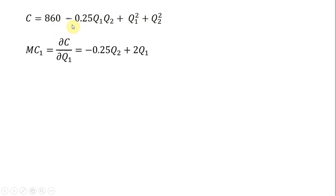Right here, the partial derivative of this term is just going to be minus 0.25 Q subscript 2. Okay? And then bring down the 2 in front. We got 2 Q subscript 1. So that's the marginal cost of producing good 1.